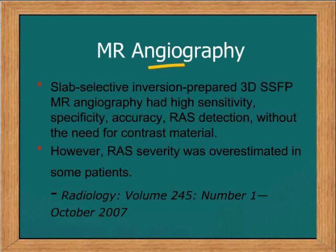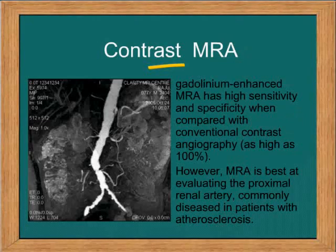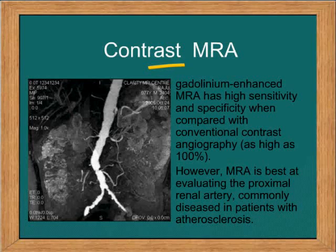MR angiography with and without contrast is also an excellent screening tool for the evaluation of renal artery stenosis. With contrast, the accuracy goes up to 100%, but it is good for the evaluation of ostial lesions and not for lesions which are distal or within the renal parenchyma.